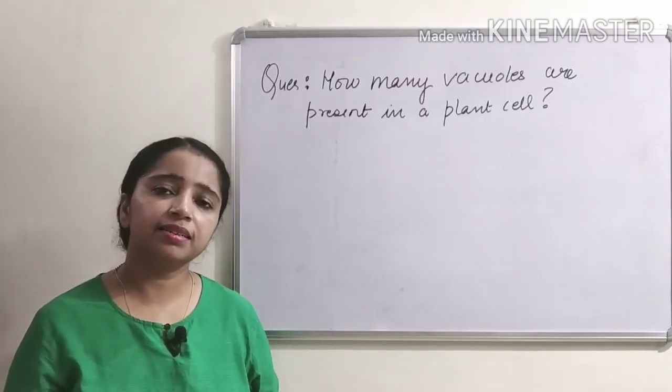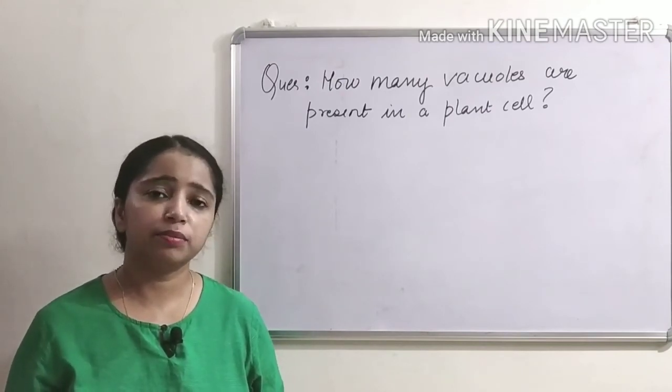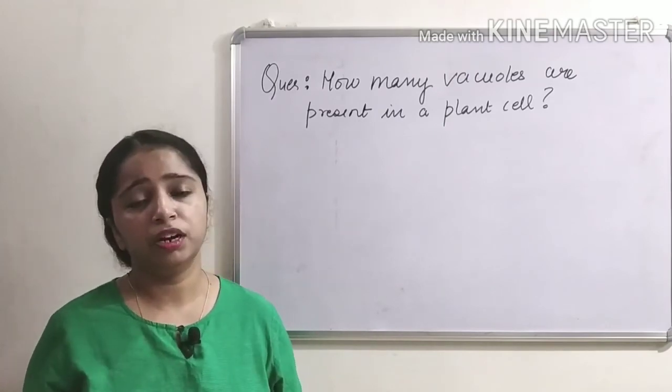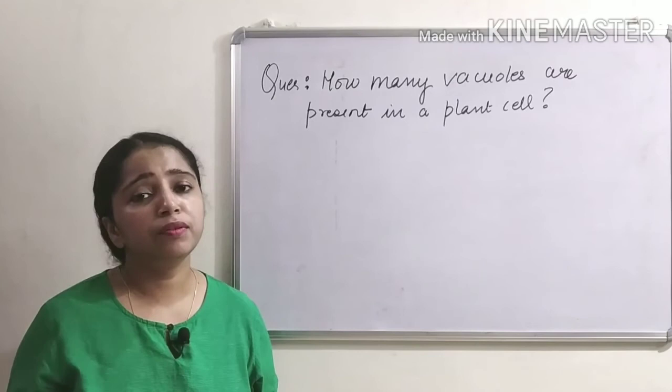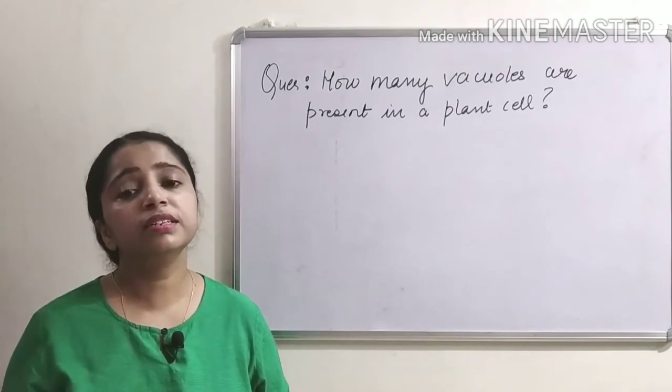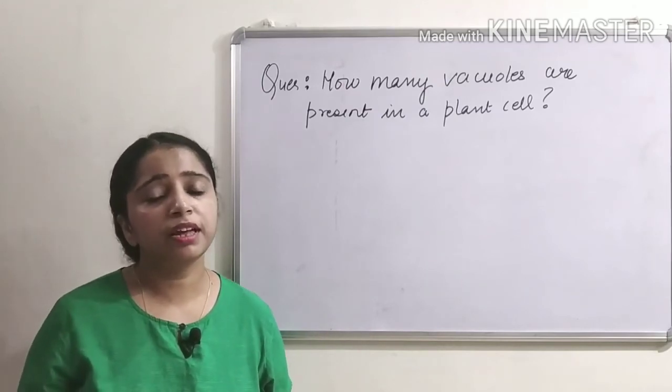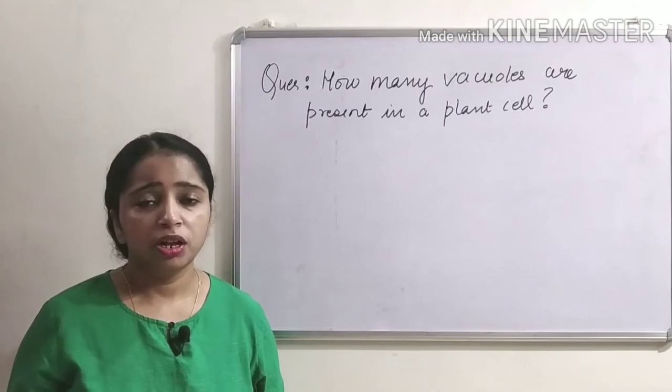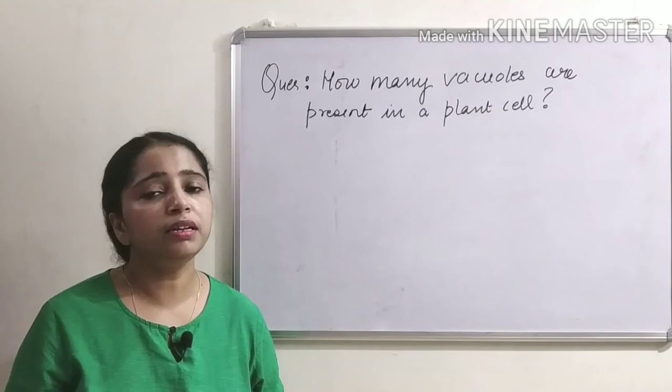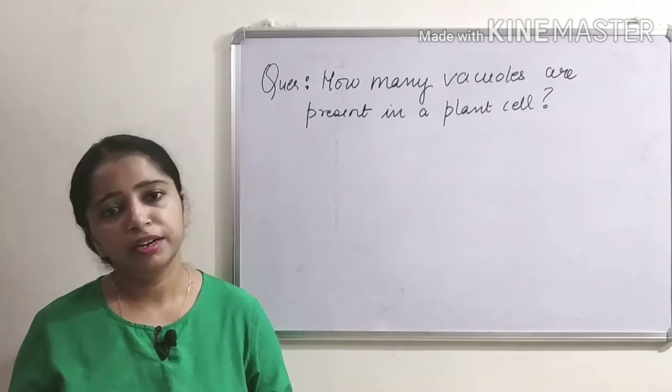Lastly, let's discuss how many vacuoles are present in a plant cell. Well, the number is not fixed. Most of the plant cells contain at least one vacuole, but some may contain more than one. It all depends on the type of the plant cell and also on its stage of development. As I already told, vacuoles can have so many functions, so different vacuoles with distinct functions can be present in the same cell, like one for storage and one for digestion.